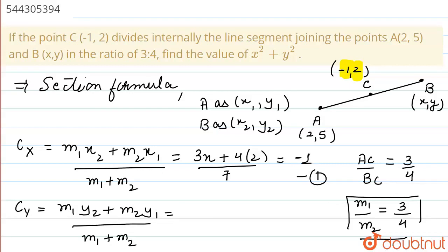Here, we will write Cy. Cy can also be written in the form of (3y + 4 times 5) upon 7. And 3 plus 4 will be 7. And what is Cy? Cy is 2. Now we will solve equations 1 and 2.